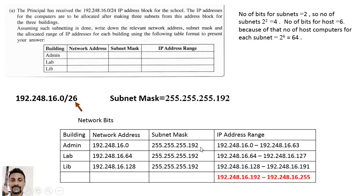The IP range for the first subnet is 192.248.16.0 to 192.248.16.63, and so on, since with 6 host bits we can create 64 addresses per subnet. The network address is the first address of each subnet and the broadcast is the last. Although borrowing 2 bits gives us 4 subnets, since we only need 3, in the exam you can write any 3 IP ranges and receive full marks.